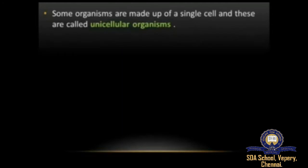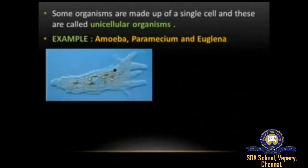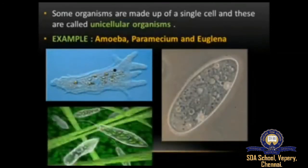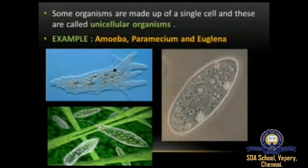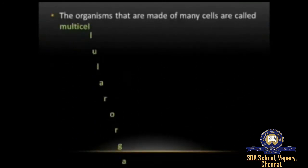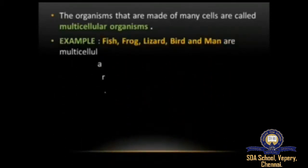Examples of unicellular organisms are amoeba, paramecium, and euglena. These organisms are made up of only a single cell, which is why they are called unicellular organisms. The organisms that are made up of many cells are called multicellular organisms.